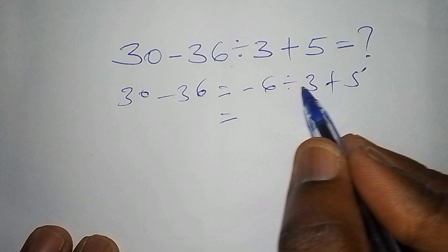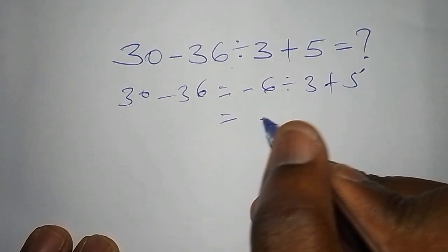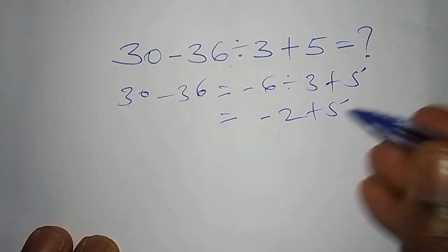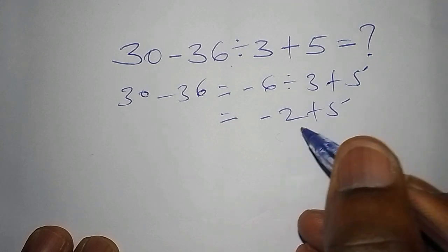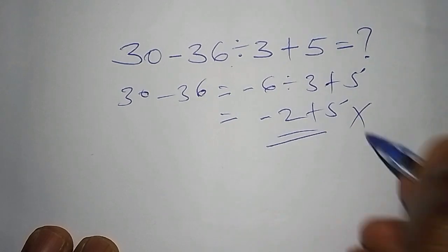Then from here, minus 6 divided by 3, they say it is minus 2, then add to 5. Now the answer that you shall have come up with is not the correct answer, meaning that it is the wrong answer.